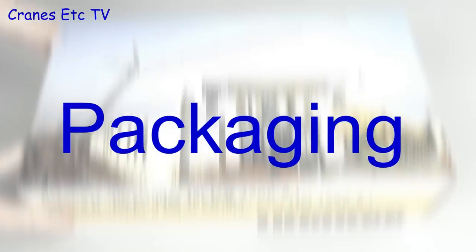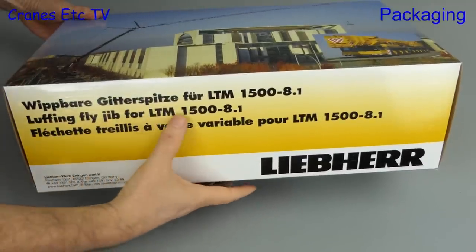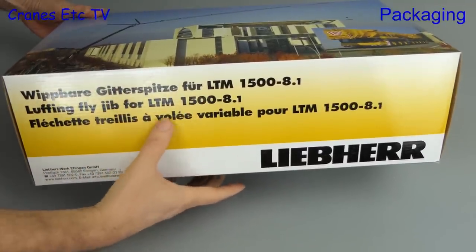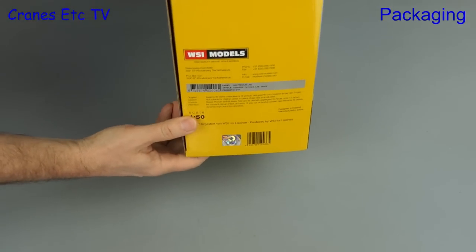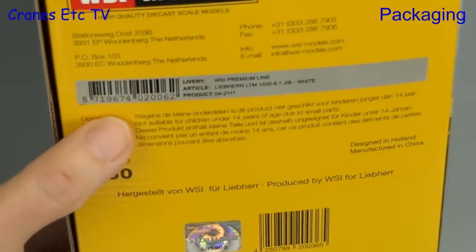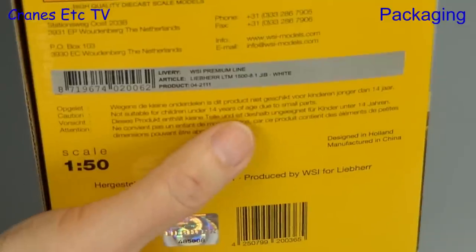The WSI model's kit for the luffing jib for the Liebherr LTM 1500 mobile crane first appeared at the end of 2014. Fast forward to 2021 and we now have this revised version. There's nothing different on the box other than a different number and this version of the model is in the white color scheme.